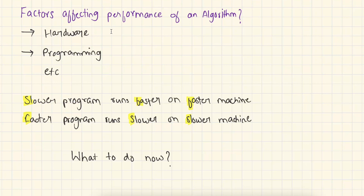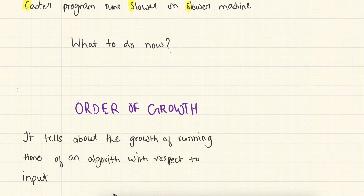In the previous video, we have seen that there are many factors affecting the performance of an algorithm, like hardware, programming language, etc. Because of all these external factors, we were unable to determine which algorithm is best. We also saw that sometimes a slower program runs faster on a faster machine and a faster program runs slower on a slower machine. So this is really confusing. Do we have any other way to figure out which algorithm is best? Yes, we do have one way, and this is where order of growth comes into picture.